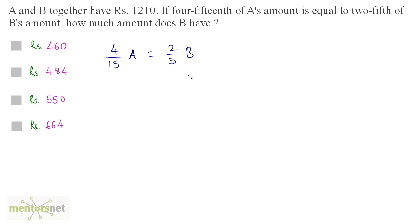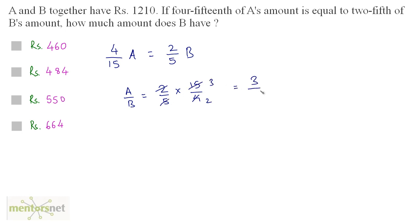Let us calculate the ratio of A and B. We have A/B is equal to (2/5) × (15/4). Two times two is four, five times three is fifteen, giving us three by two. Therefore, the ratio of A to B is 3:2.